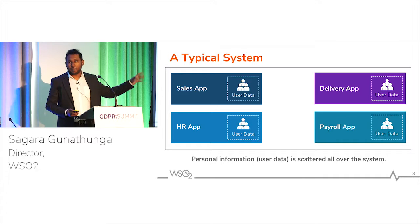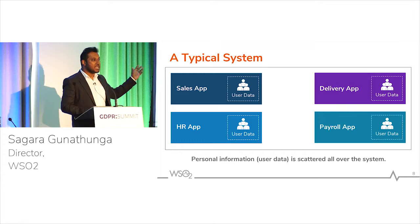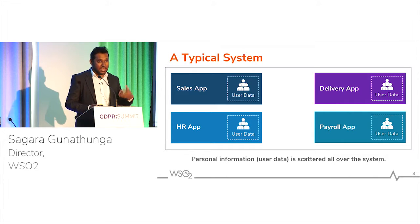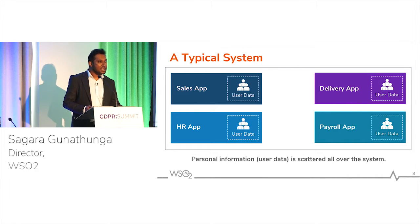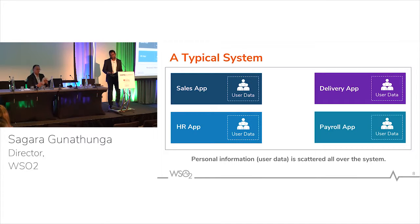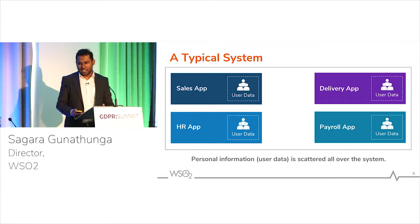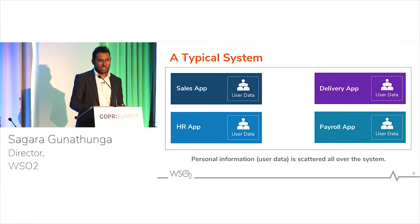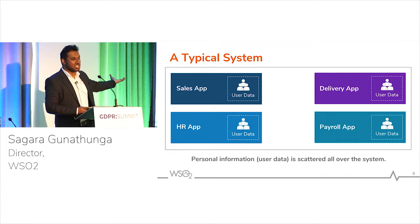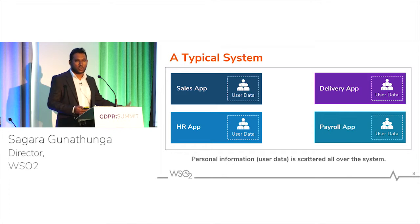What I want to emphasize in this example is that in each application, you have a user management module. You have to manage people or users — that is a compulsory requirement. For example, a sales application handles sales, but people have to log in and perform those sales, and when you make a transaction you need to track who is responsible. In practical use cases, almost any application needs a user management module, and that ends up duplicating personal information in many systems within your organization.